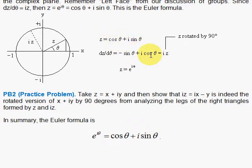And i times i is negative 1, and you'll get this. So this is interesting that by taking the derivative of z, it's the same as multiplying by i.